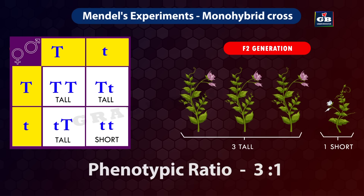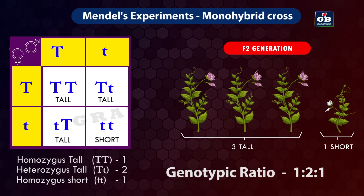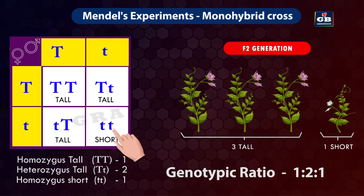Phenotypic ratio means the ratio based on physical appearance. Looking at the genotypic ratio of F2: one TT (homozygous tall, a pure breed tall plant), two Tt (heterozygous tall, having one dominant and one recessive allele), and one tt (homozygous short, a pure breed short plant). So the genotypic ratio of the F2 generation is 1:2:1.